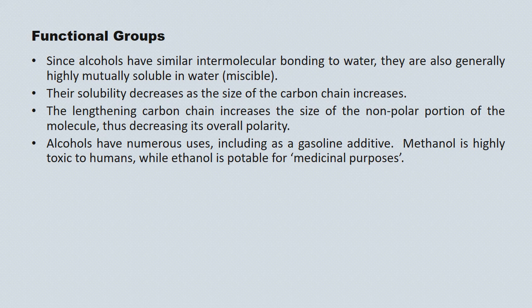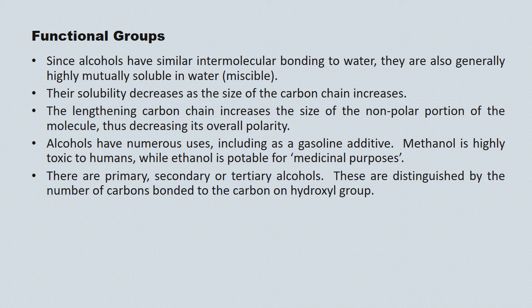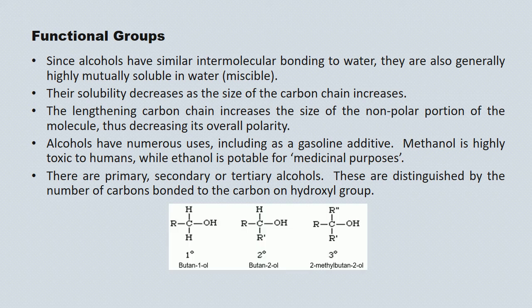Alcohols have numerous uses. They're gasoline additives. Methanol is highly toxic to humans — it's wood alcohol, but we find it in antifreeze. Ethanol is the potable variety of alcohol for, as they say, medicinal purposes. There are primary, secondary, and tertiary alcohols, distinguished by the number of nearest carbon neighbors to the hydroxyl carbon. A primary alcohol has one nearest neighbor that's a carbon. A secondary alcohol has two, and a tertiary alcohol has three nearest neighbors that are all carbons.